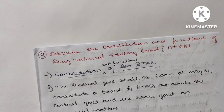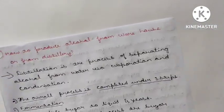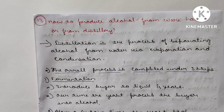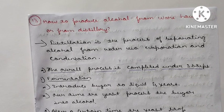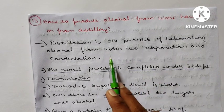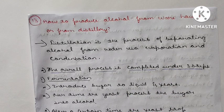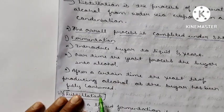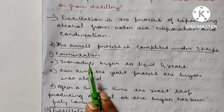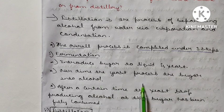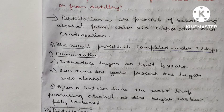Question 13: How to produce alcohol from a warehouse or distillery? Distillation is the process of separating alcohol from water via evaporation and condensation. The overall process is completed in three steps: fermentation, distillation, and finishing. In fermentation, sugar is introduced to a liquid with yeast; over time the yeast converts the sugar into alcohol. After a certain time the yeast stops producing alcohol as the sugar has been fully consumed.